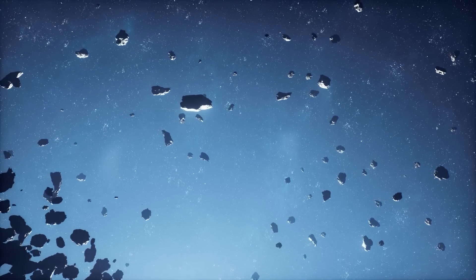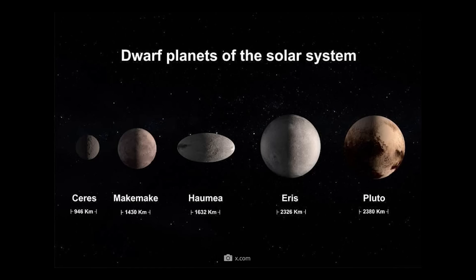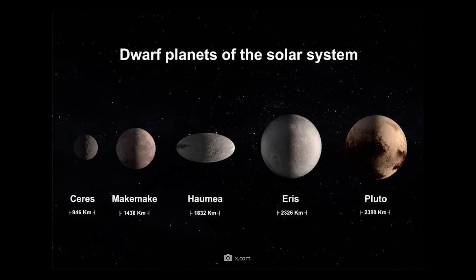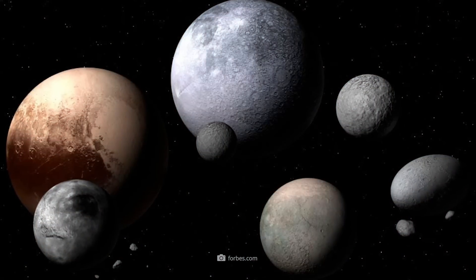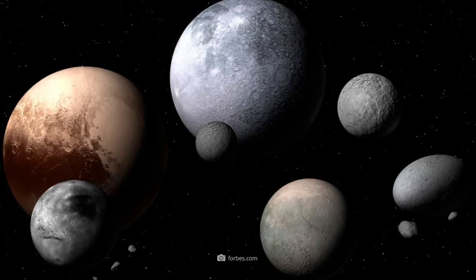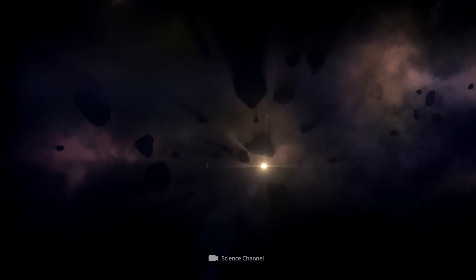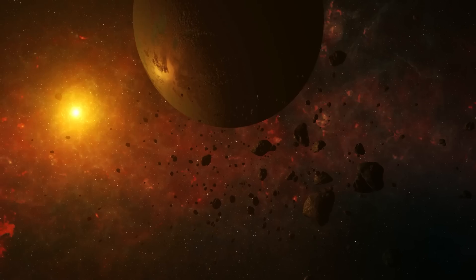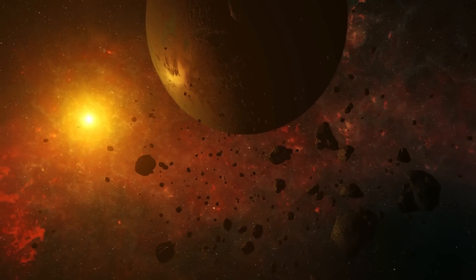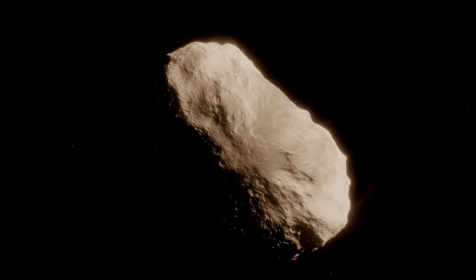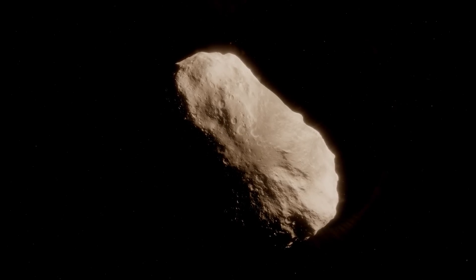The Kuiper Belt is not only a place of darkness and cold, but also a dynamic zone where many dwarf planets such as Pluto, Eris, Haumea, and Makemake can be found. These objects offer unique insights into the chemical composition and physical conditions of the early solar nebulae from which our solar system was formed. In addition to the dwarf planets, there are countless other objects, including comets and smaller icy bodies that may contain important organic compounds relevant to understanding the chemistry of life.